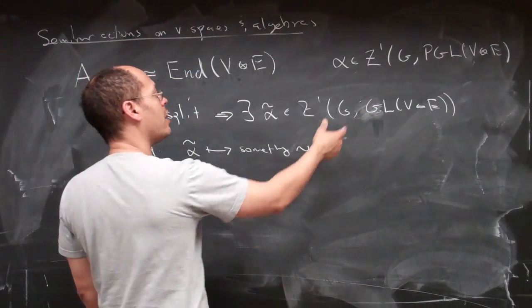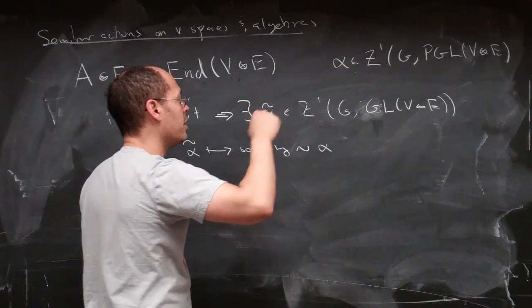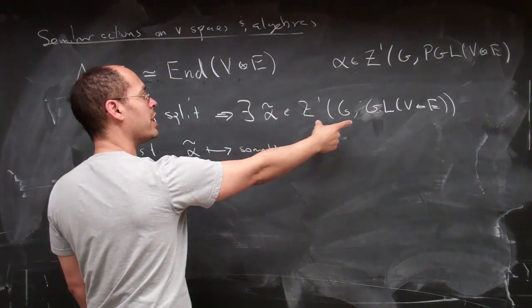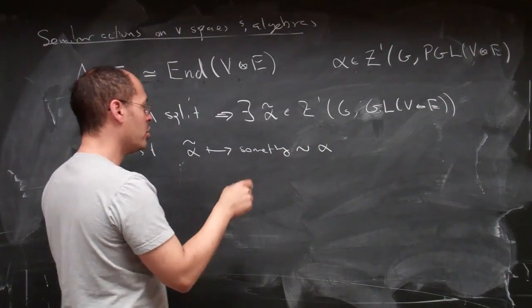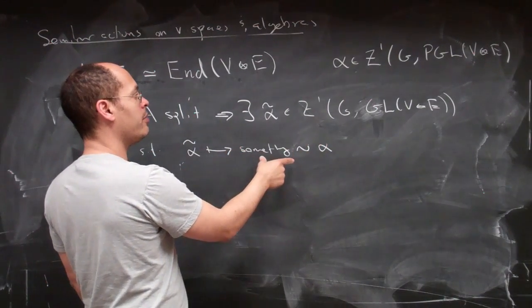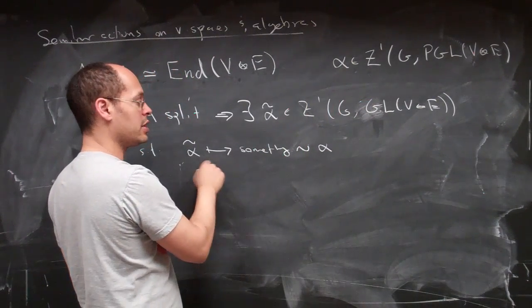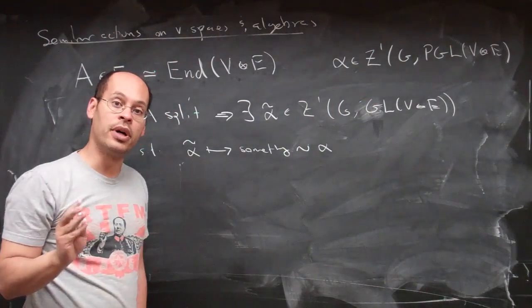That says that we can take our one co-cycle in PGL, and we can find a one co-cycle in GL such that when we look at the induced element in Z1 PGL from alpha tilde, that this gives us something co-homologous to alpha.